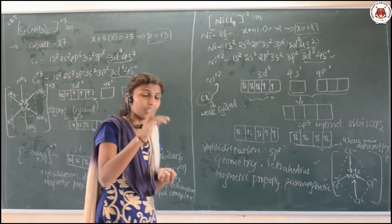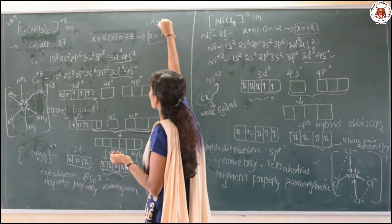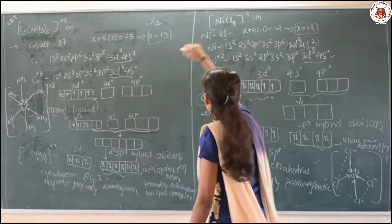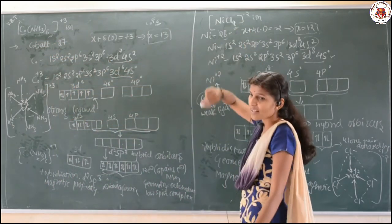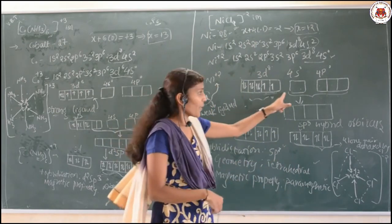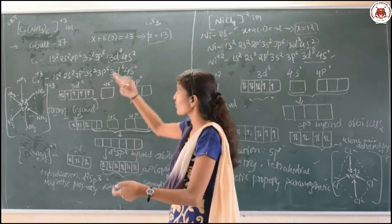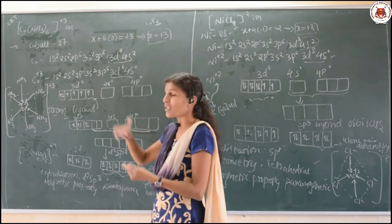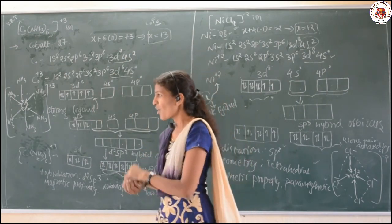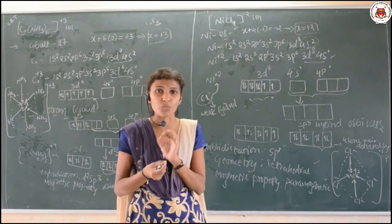To compare: the first example was [CoF₆]³⁻ with 6 ligands (d²sp³, octahedral). This second example [Co(NH₃)₆]³⁺ also has 6 ligands. The [NiCl₄]²⁻ has 4 ligands — when there are 4 ligands, usually only s and p orbitals are involved (sp³). When there are 6 ligands, d orbitals are also utilized (d²sp³). One more example will be continued in the next class. Thank you.